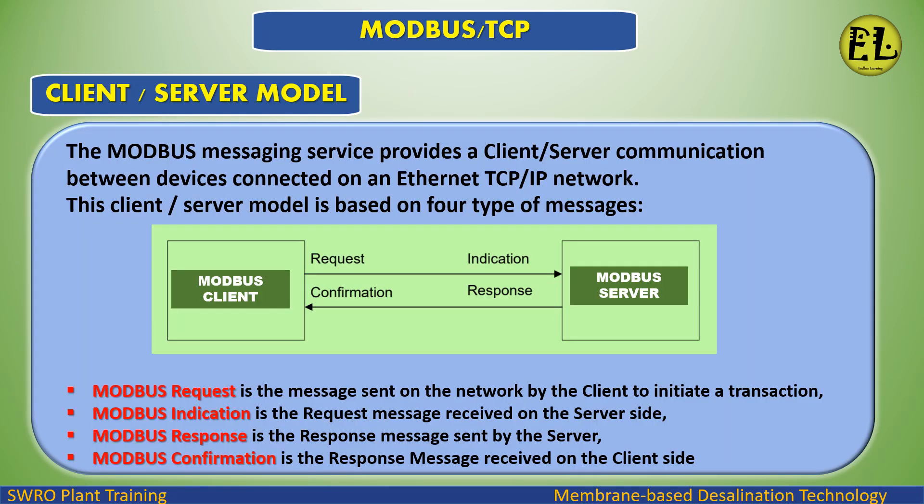The client/server model: The Modbus messaging service provides client/server communication between devices connected on an Ethernet TCP/IP network. This model is based on four types of messages: Modbus request (sent by the client to initiate a transaction), Modbus indication (the request received on the server side), Modbus response (sent by the server), and Modbus confirmation (the response received on the client side).